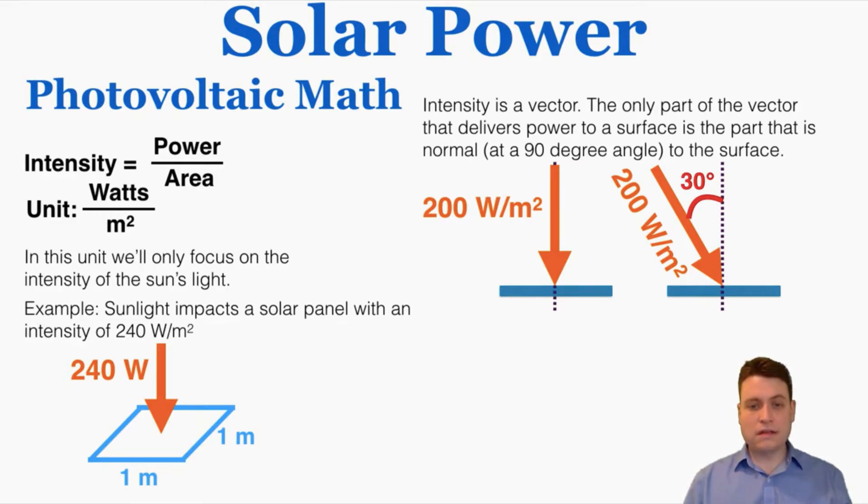As an example, the intensity on the left there, 200 watts per meter squared, because that's hitting the surface at an exact 90 degree angle to the surface, it's normal to the surface, all of that intensity is being experienced by the surface. There's no angle between the intensity and the normal line to the surface. So this intensity is delivering the full 200 watts per meter squared to the surface.